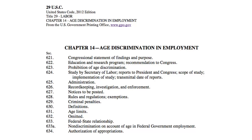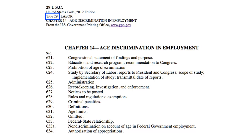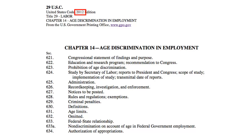This page has an example of a statute from the GPO. The name of this act is the Age Discrimination in Employment Act. The title number is 29. This is found in the United States Code, which is abbreviated USC. The section numbers range from 621 to 634. Looking near the top, we can see that this is from the 2012 edition.